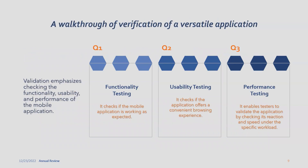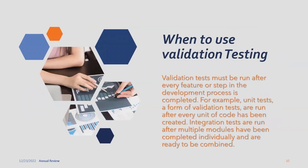Validation emphasizes checking the functionality, usability, and performance of applications. For functionality testing, it checks whether the complete functionality of the application is working as expected — whether it is a mobile, web-based, or desktop application. Usability testing verifies the requirements against the built product. Performance testing verifies the throughput of the application — how it behaves when a single user is interacting with a functionality versus when millions of users are interacting with it simultaneously.